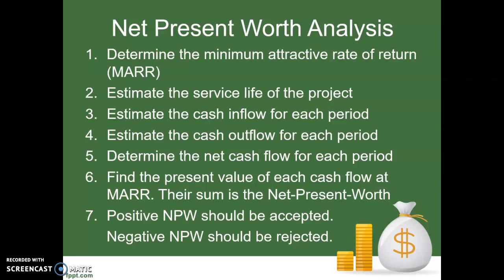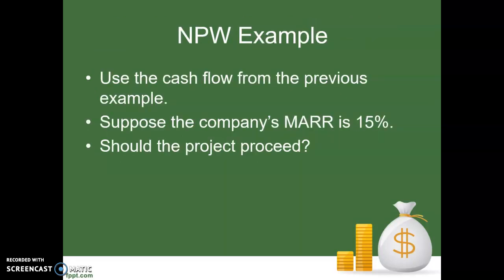If by summing the present values we find that the net present worth is negative, that means that this project is going to give us less than our MARR. It doesn't necessarily mean that the project is going to lose money — it just means that it's not going to make enough money to interest us. So let's look at an example here — the same example we've been looking at — and instead of doing a payback period analysis, we're going to do a net present worth analysis. We're going to say that our minimum attractive rate of return is 15%.